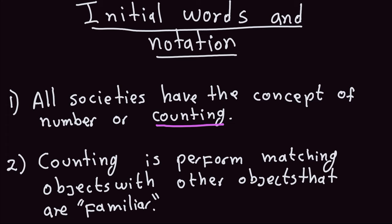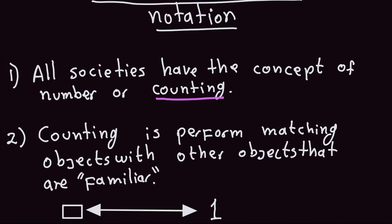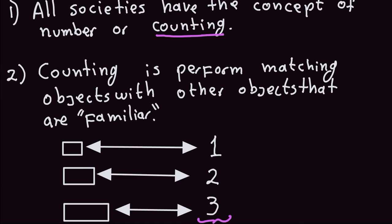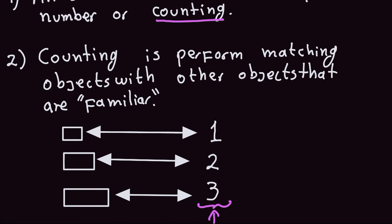What is counting in the real sense of the word? Counting is just matching objects that we wish to count with other objects that are familiar. When we are counting objects — say, these rectangles here — what we actually do is say one, two, three. We are matching these geometric figures with the cardinal numbers, and the cardinal numbers are those numbers we use for counting. That's how number theory starts.